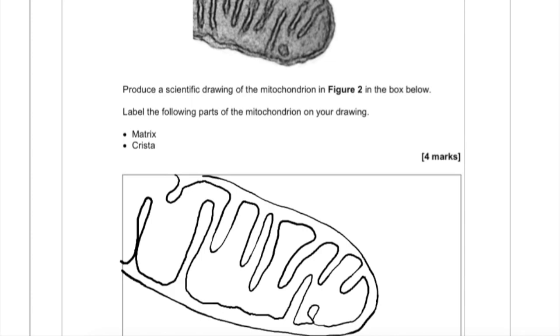And then we need to label it. So the matrix, that's this middle part here. I'm going to draw a straight line and label it like that. And then the crista are these inner foldings of the membrane here. That's going to get us another mark.